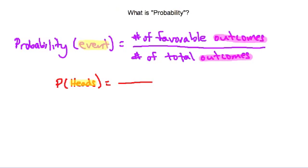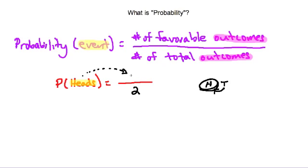To better understand this, let's draw it out. A coin has heads on one side and tails on the other. So the event has a total of two outcomes: heads or tails. The number of outcomes matching our desired outcome — heads — is one. So we have one favorable outcome out of two total outcomes. The probability of getting heads is one out of two, which we can also express as 0.5 or 50%.